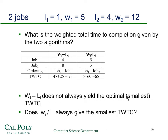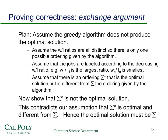So that tells us we can eliminate the difference ordering — we know it won't yield the optimal solution. The question for this video is: does the ratio always give the smallest total weighted time to completion? The rest of this video will be dedicated to proving that the ratio ordering always gives the smallest total weighted time to completion. We're going to prove the correctness of the ratio ordering using what's called an exchange argument.